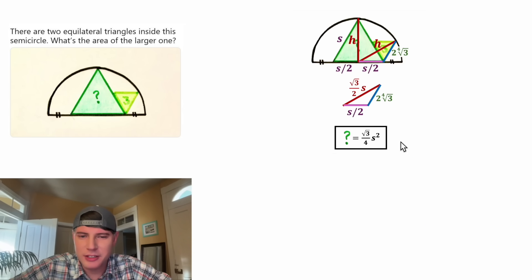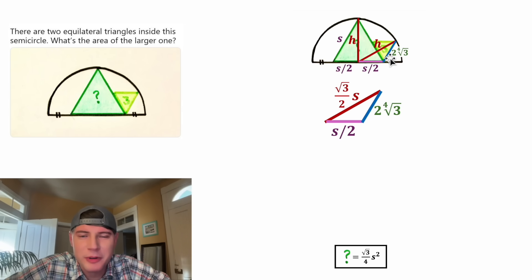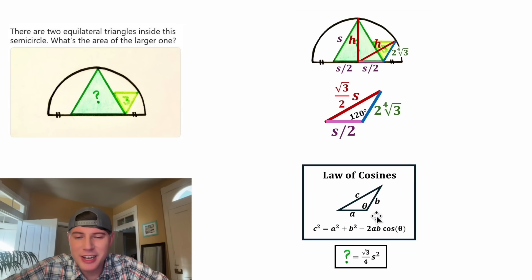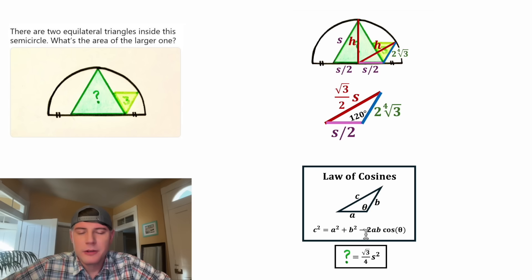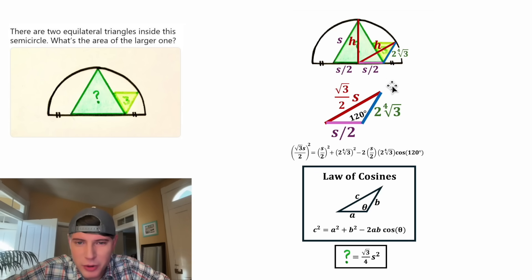The angle at the bottom of our new triangle is made up of the two base angles of these two equilateral triangles. Since they're equilateral triangles, each of those angles is 60 degrees, which means the whole angle is 120 degrees. Now we have three sides and an angle — this is perfect for the law of cosines. The law of cosines is a more general case of the Pythagorean theorem: A squared plus B squared equals C squared, but we subtract two times one side times the other times the cosine of the included angle.